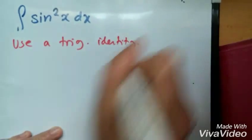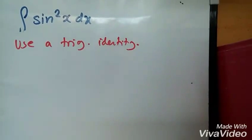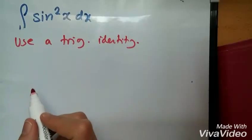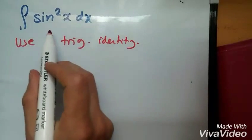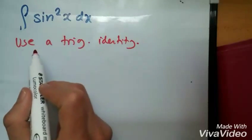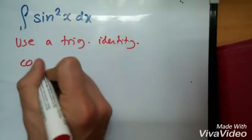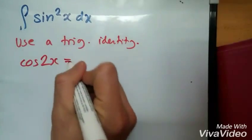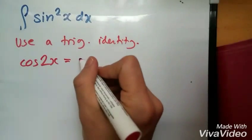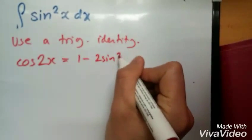Now what kind of identity are we speaking of? Well, in particular we're speaking of a double angle, the one that involves strictly sine squared. Simply, I'm looking at cos 2x equals 1 minus 2 sine squared x.